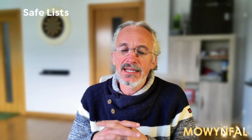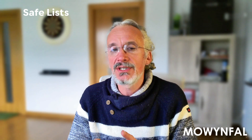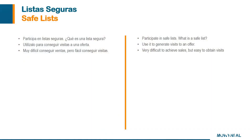Safe lists are platforms where you can log in and subscribe. For example, you have 1000 marketers there — people that are actually receiving the promos you make. It's quite hard to get sales from there because these people don't want to buy anything. They're actually selling, just like you.